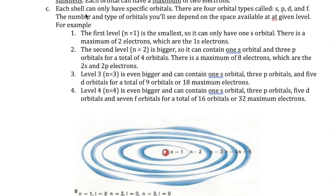Each level or orbit can potentially have four different orbital types: S, P, D, and F orbitals. Continuing with the apartment analogy, the levels are similar to floors in an apartment building, and on each floor you have different types of apartments — a studio, a one-bedroom, a two-bedroom, or a three-bedroom — corresponding to the different orbital types.